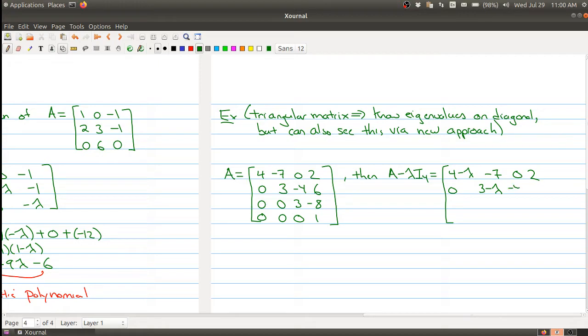minus 4, 6, 0, 0, 3 minus lambda, negative 8, and 0, 0, 0, and 1 minus lambda.